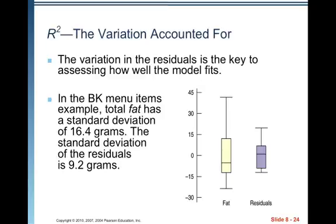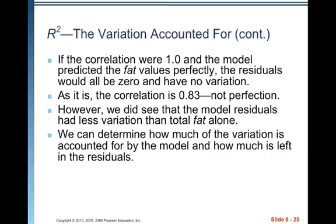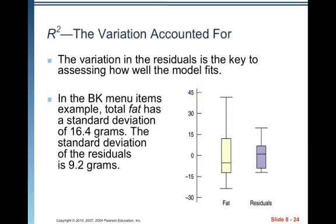We can determine how much of the variation is accounted for by the model and how much is left in the residuals. How much of that variation was accounted for by the model versus how much is left there in the residuals? Because if it was perfect, we would just have like one little line there. Everything, the residuals would just all be 0. And 100% of the variation would be explained by the model. But that's not the case.